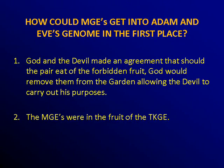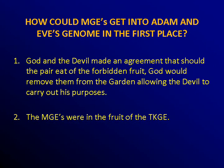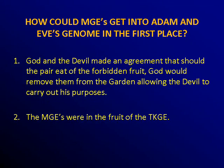How could mobile genetic elements get into Adam and Eve's genome in the first place? Well, if you're awake, I think you know where I'm going. We have two choices: God and the devil made an agreement that should the pair eat of the forbidden fruit, God would remove them from the garden allowing the devil to carry out his purposes — that's an option. Our history as written in the Bible doesn't comment on whether there was something actually in the fruit or if this was an agreement. Our other option is there were mobile genetic elements in the fruit.